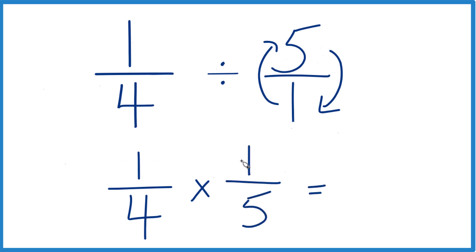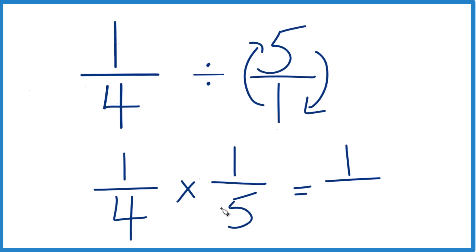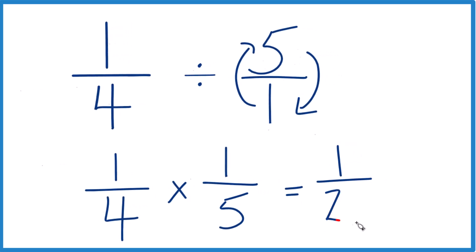With fractions, we multiply the numerators: 1 times 1, that's 1. And then the denominators: 4 times 5, that's 20.